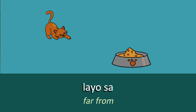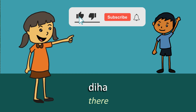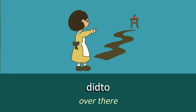Our next word is 'Far From', which is 'Layu Sa'. So what's the word for 'Here'? 'Din' — Din is Here. And then our next word is 'There'. There is 'Dihar'. You can expand that a little to 'Over There', which is 'Ditu'. Over There is usually used when the object is far from both the speaker and the listener.